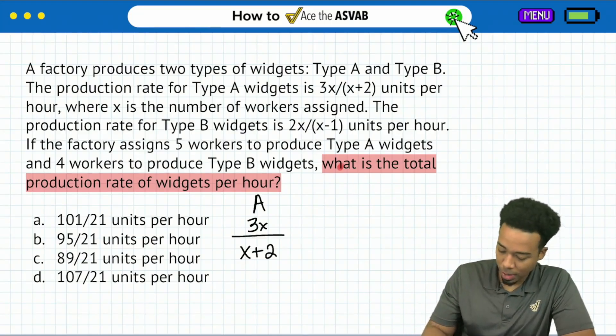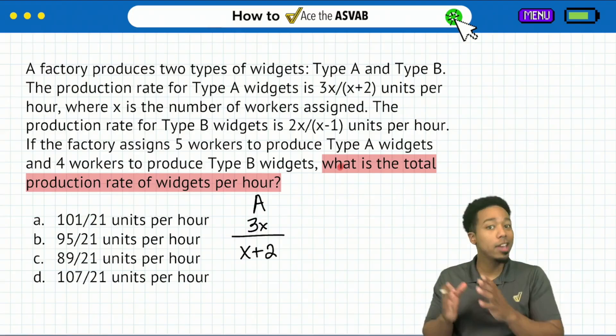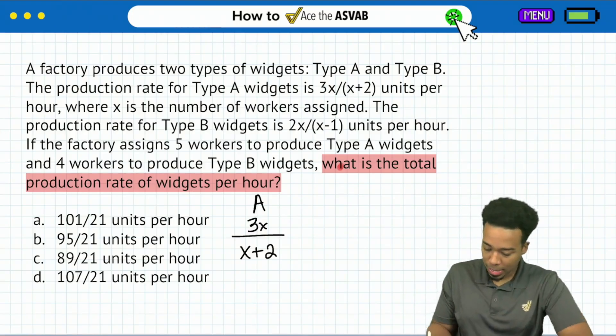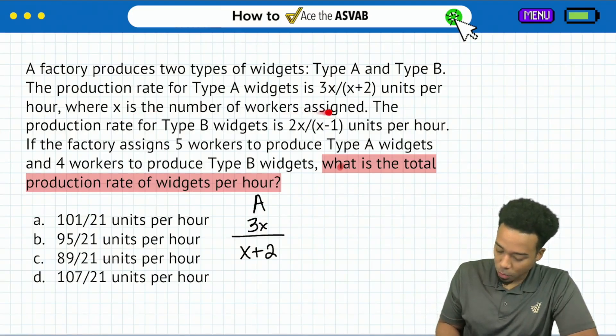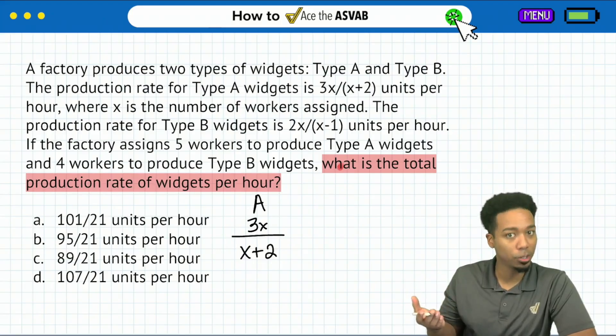That's the production rate for widget A per hour. Now, am I going to try to sit here and explain how that is going to be a number per hour? No, I don't care. I'm just taking what they give me. Okay, then where x is the number of workers assigned. So depending on the number of workers that we have, I see we'll have a different production rate.